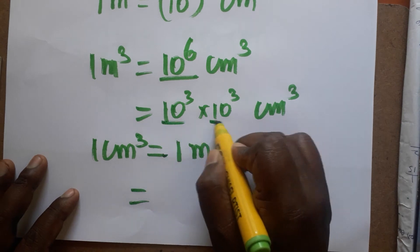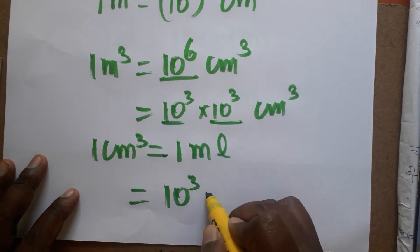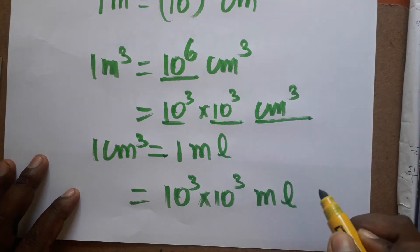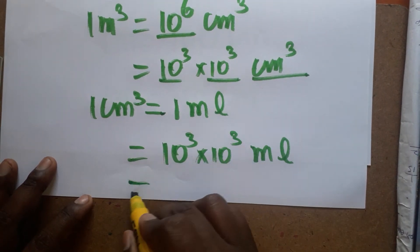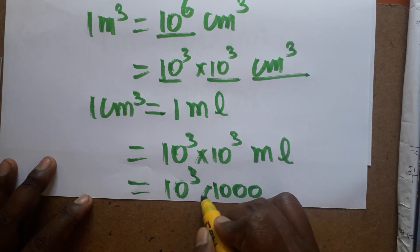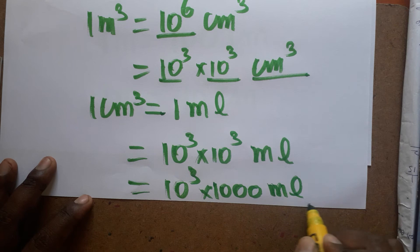10 power 6, we can write 10 power 3, 10 power 3. So 10 power 3 into 10 power 3 centimeter cube, we can take it as ml. This 10 power 3, I am going to take it as 1000. So 10 power 3 is 1000 ml, and 1000 ml we can take as...